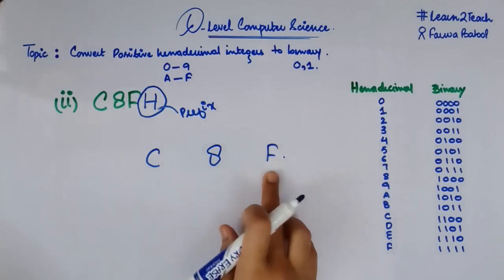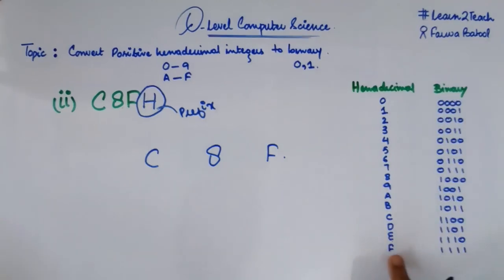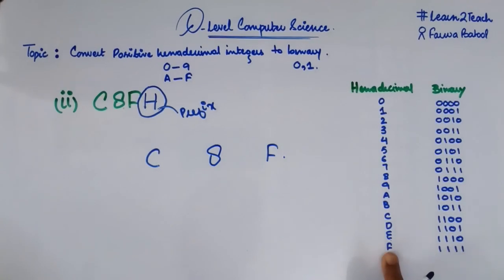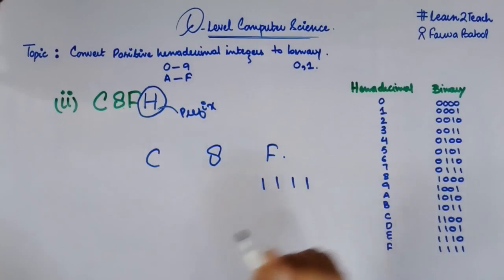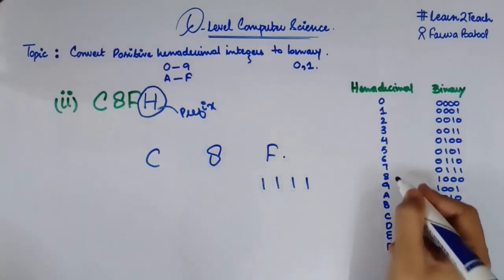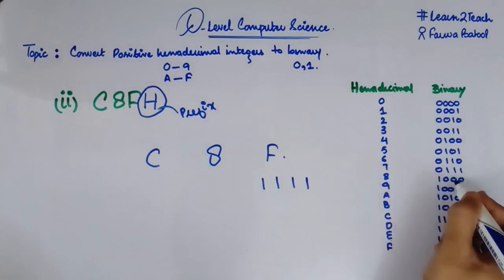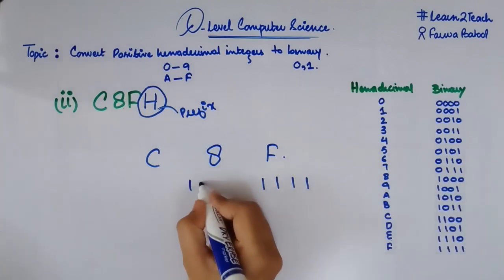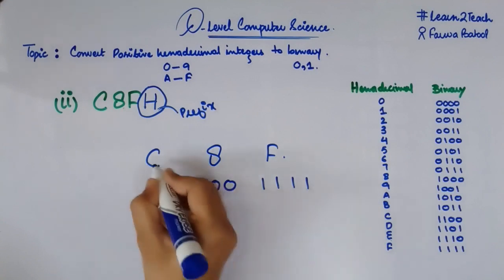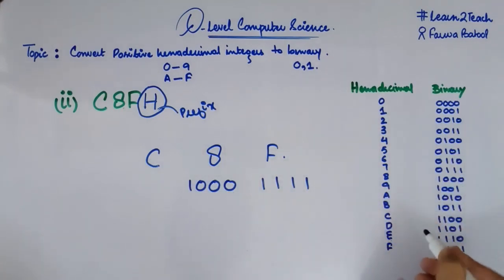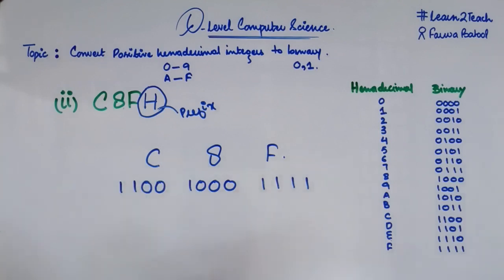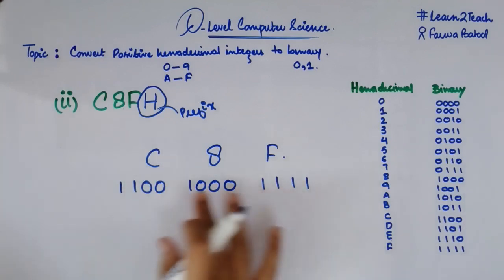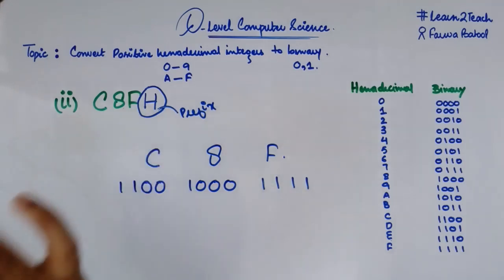I need to find the binary equivalent of each digit. F equals 1111 in binary. 8 equals 1000 in binary. C equals 1100 in binary. So these are the binary equivalents for each hexadecimal digit in this number.